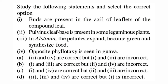Next is a statement-type question. Statement 1: buds are present in the axil of leaflets of a compound leaf — wrong, buds are absent at the base of each leaflet in compound leaves like neem. Statement 2: pulvinus leaf base is present in some leguminous plants — correct, a swollen leaf base is seen in plants like beans. Statement 3: in Alstonia, petioles expand, become green, and synthesize food — wrong, this is seen in Australian Acacia. Statement 4: opposite phyllotaxy is seen in guava — correct. So statements 2 and 4 are correct; option A is correct.